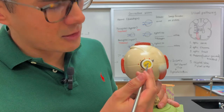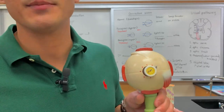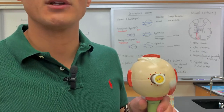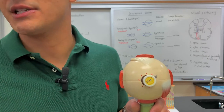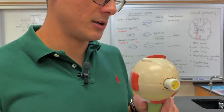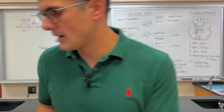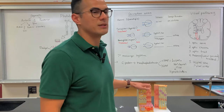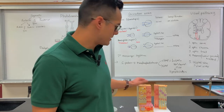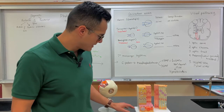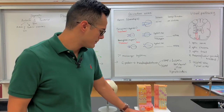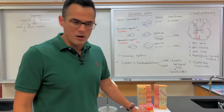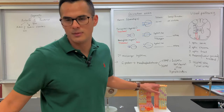These arteries and veins here are the central retinal arteries, giving the retina its own blood supply because the retina needs its nutrients for all of the cellular processes to occur. This model is primarily showing the retina. This here is the retina, this is the choroid where the blood supply of the eye is, and then this is the sclera, the white part of the eye.